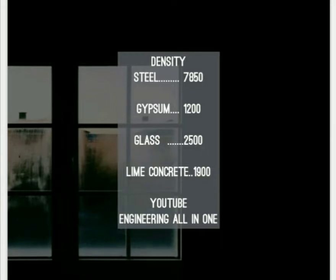Gypsum possesses a density of 1200 kg per cubic meter. Glass has a density of 2500 kg per cubic meter, while lime concrete has a density of 1900 kg per cubic meter.